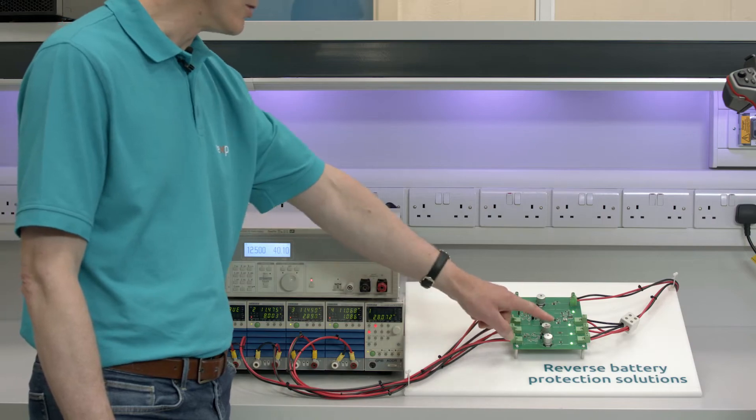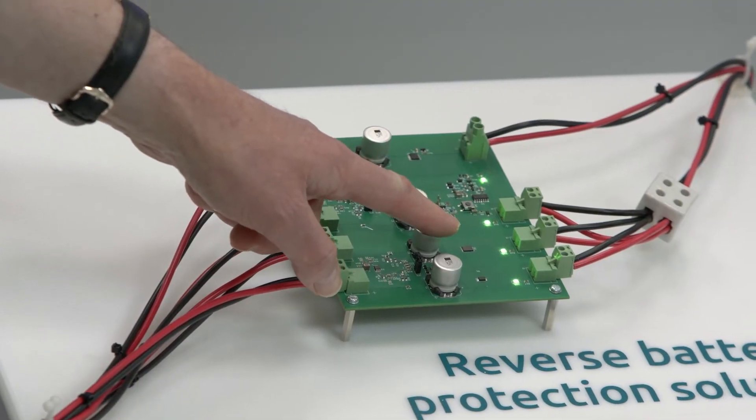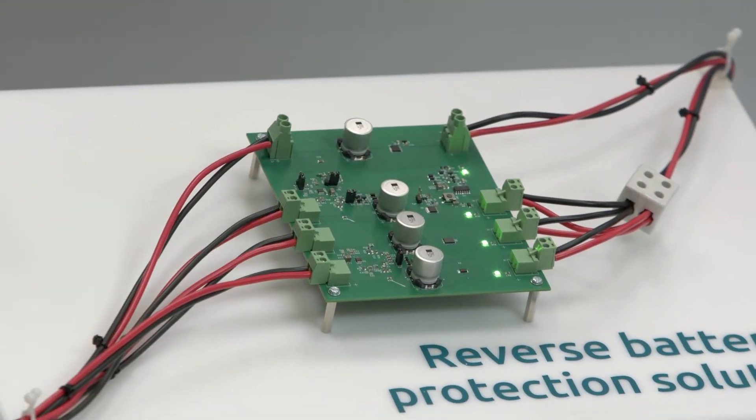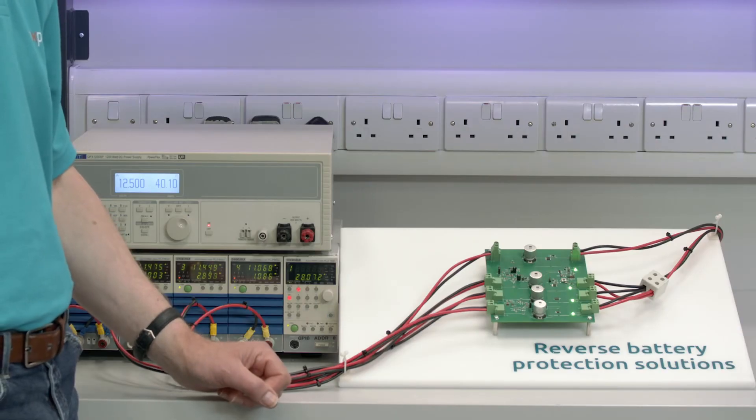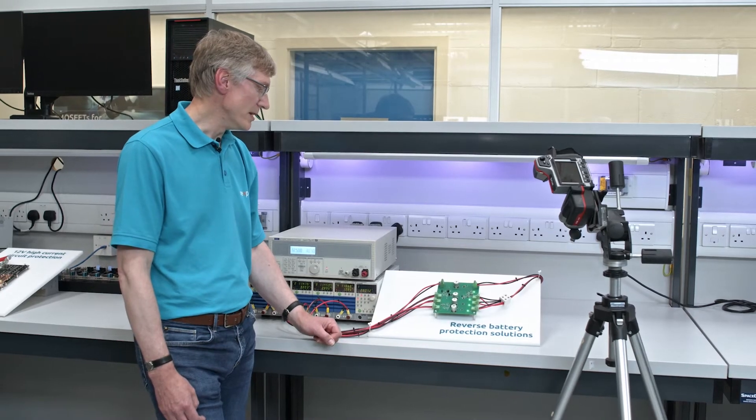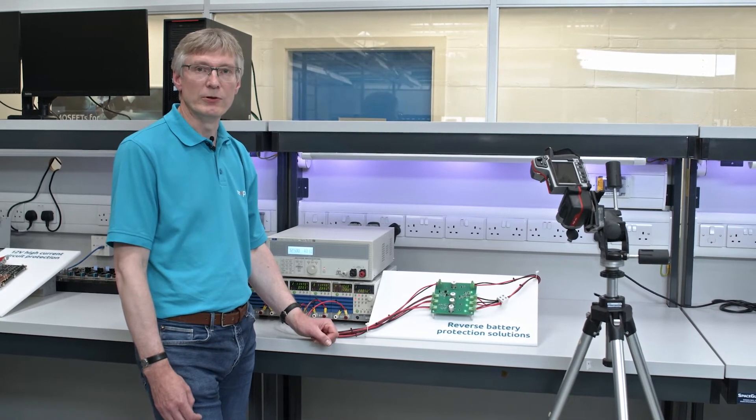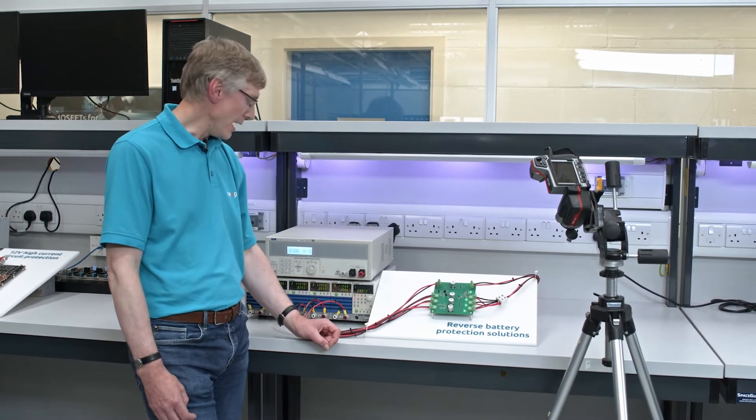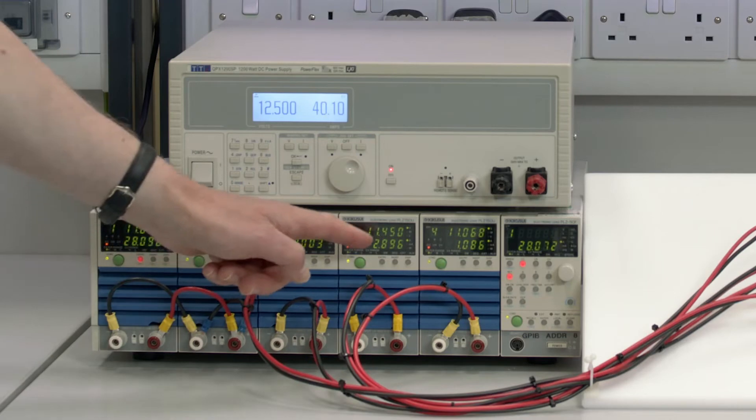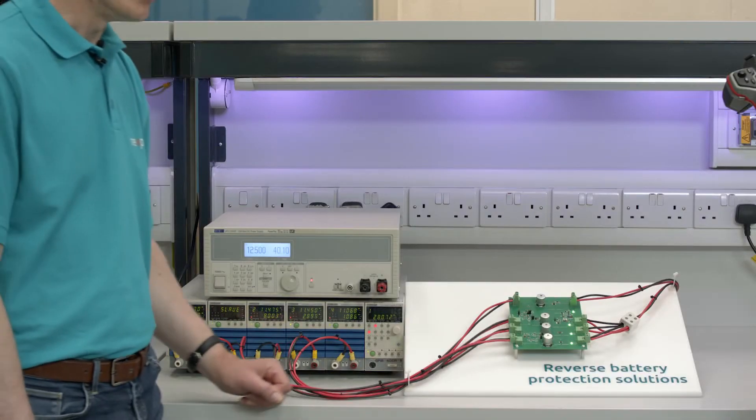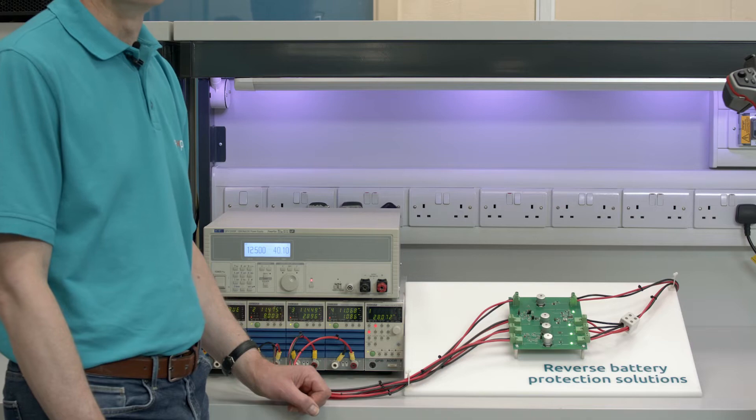In the second application we've got a Schottky rectifier which is rated at 60 volts and 10 amps. It's in a CFP15 package. The voltage drop in this case is about 0.35 of a volt and the current is about 2.9 amps. Therefore the total conduction loss in this case is about 1 watt.